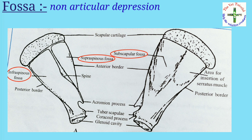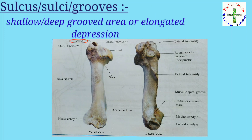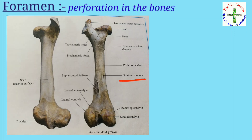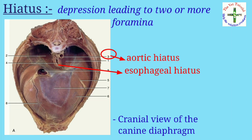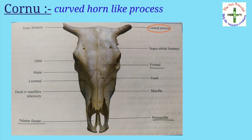Then fossa — it is a non-articular depression. Example: found in scapula, humerus, and femur. Then sulcus or sulci — it is a shallow or deep grooved area or elongated depression. Example: found in humerus and radius. Then foramen — it is a perforation in the bone for transmission of vessels, nerves, etc. Example: found in skull, scapula, humerus, and femur. Then hiatus — it is a depression leading to two or more foramina. Example: found in the diaphragm.